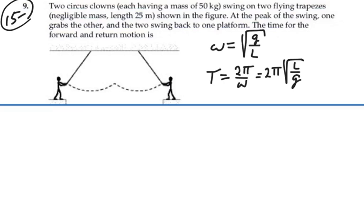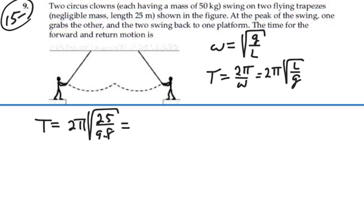So if we just had one clown on our trapeze, the period would be equal to two pi times the square root of l, which is 25, over g, 9.8. That is equal to 10.0 seconds. So that is the period of the pendulum going there and back again for one person on the trapeze.